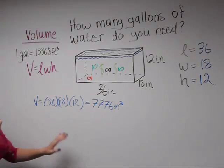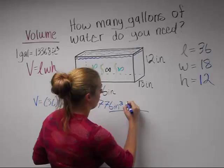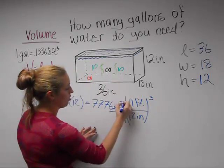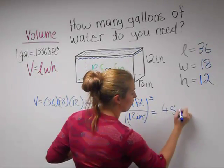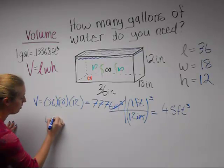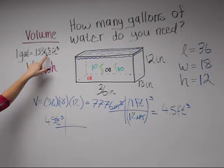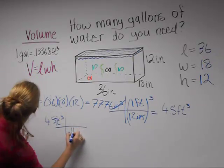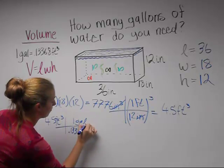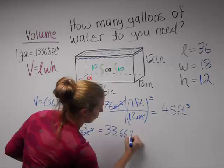This is in inches cubed. Now we have a unit issue — we need feet cubed instead of inches cubed. So we're going to convert: there are 12 inches in one foot, and this conversion is cubed. So inches cubed cancel and we're left with 4.5 feet cubed. Now we need to figure out how many gallons are in this fish tank. We take our 4.5 feet cubed, and we know that one gallon is 0.13368 feet cubed. Feet cubed cancel, and this gives us 33.6622 gallons.